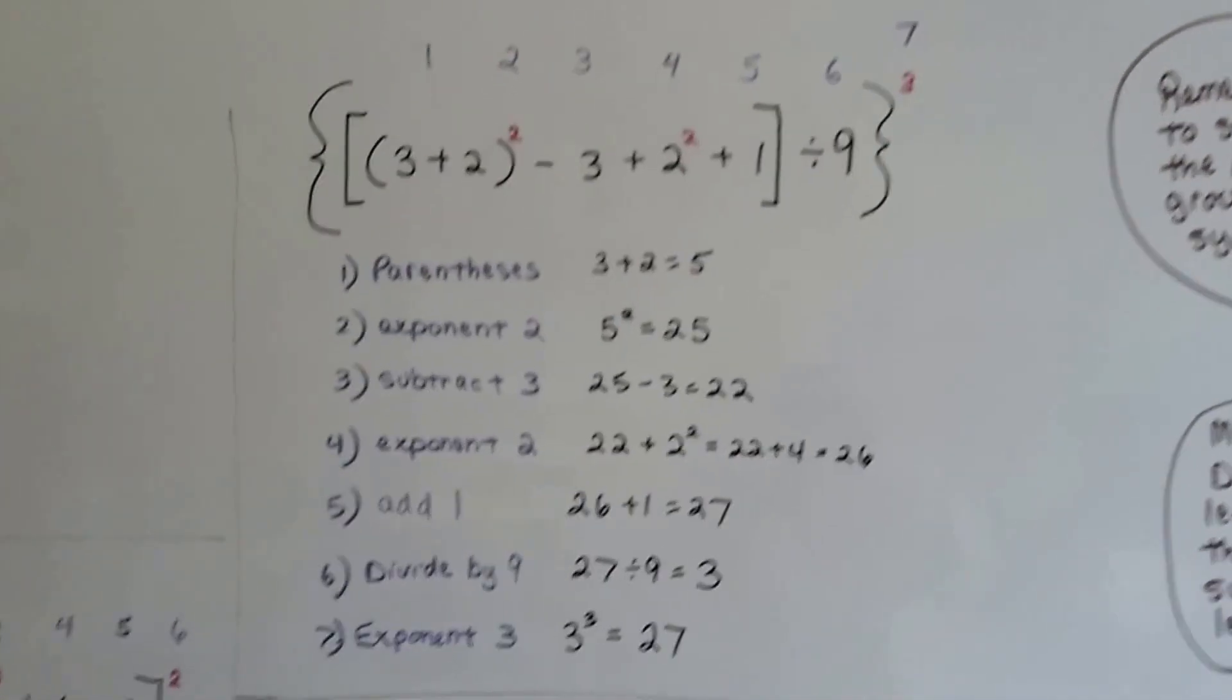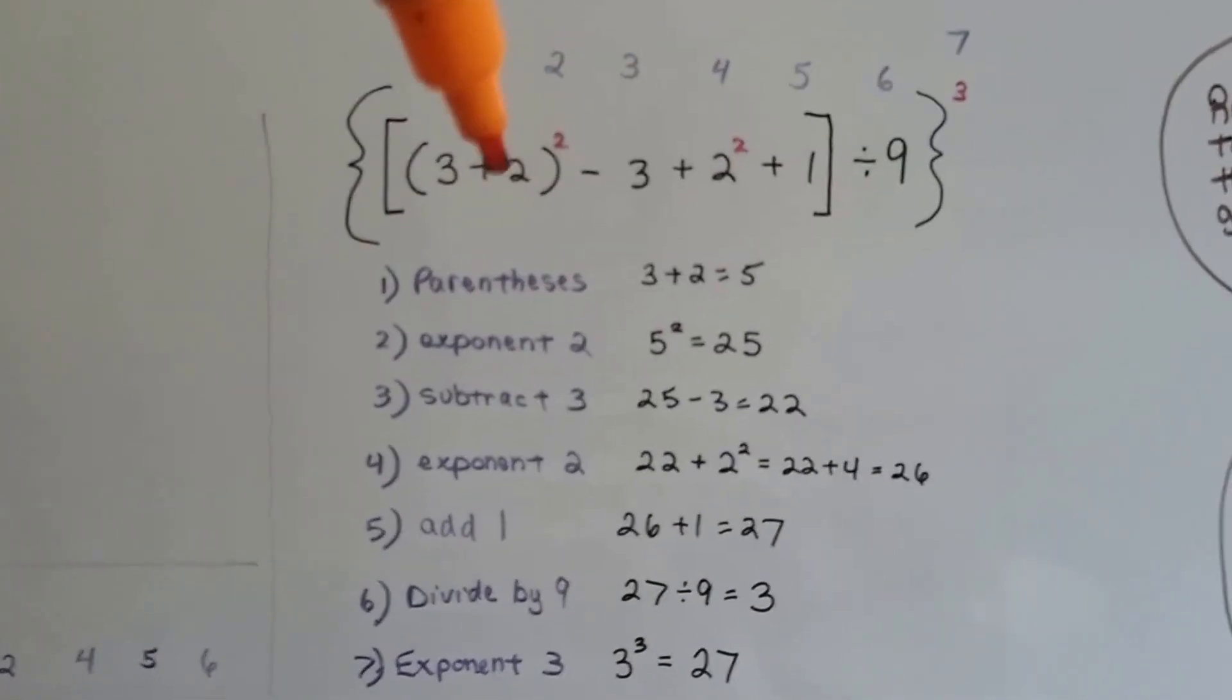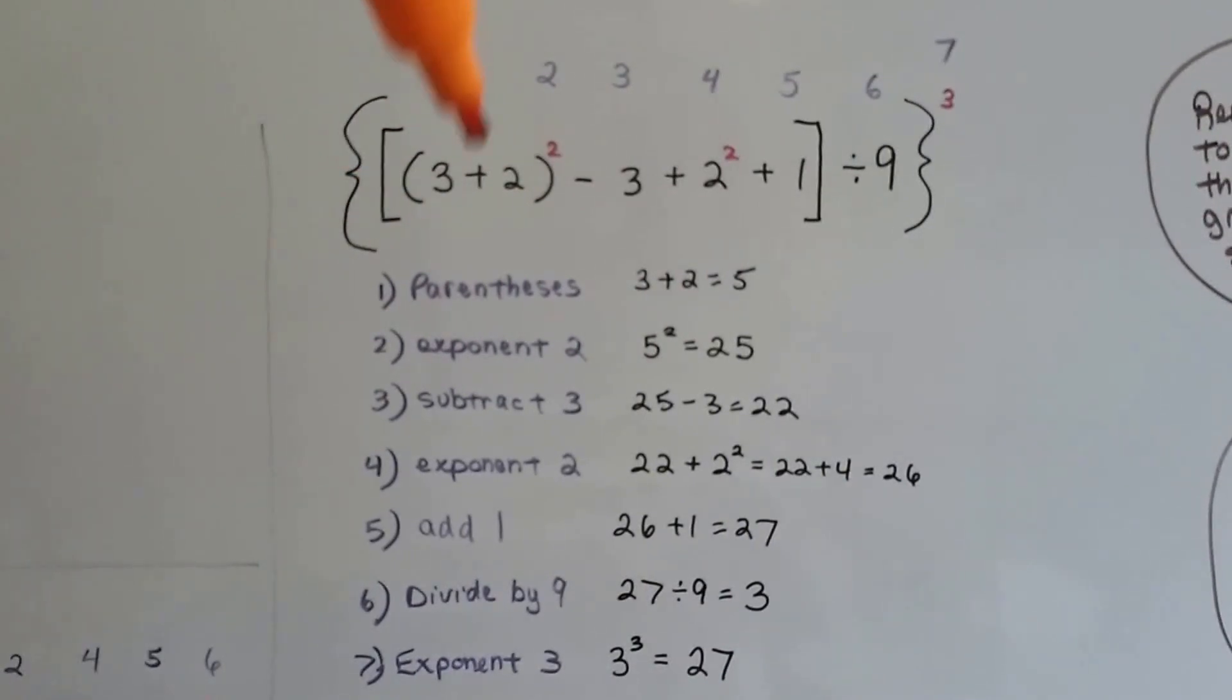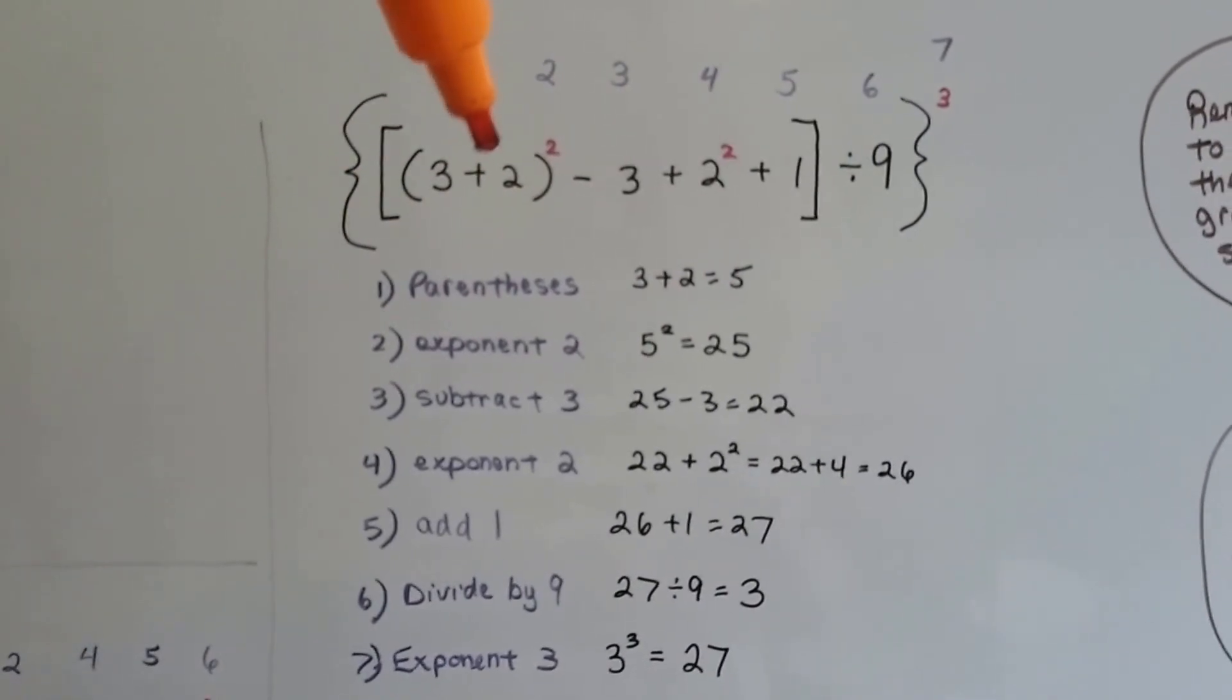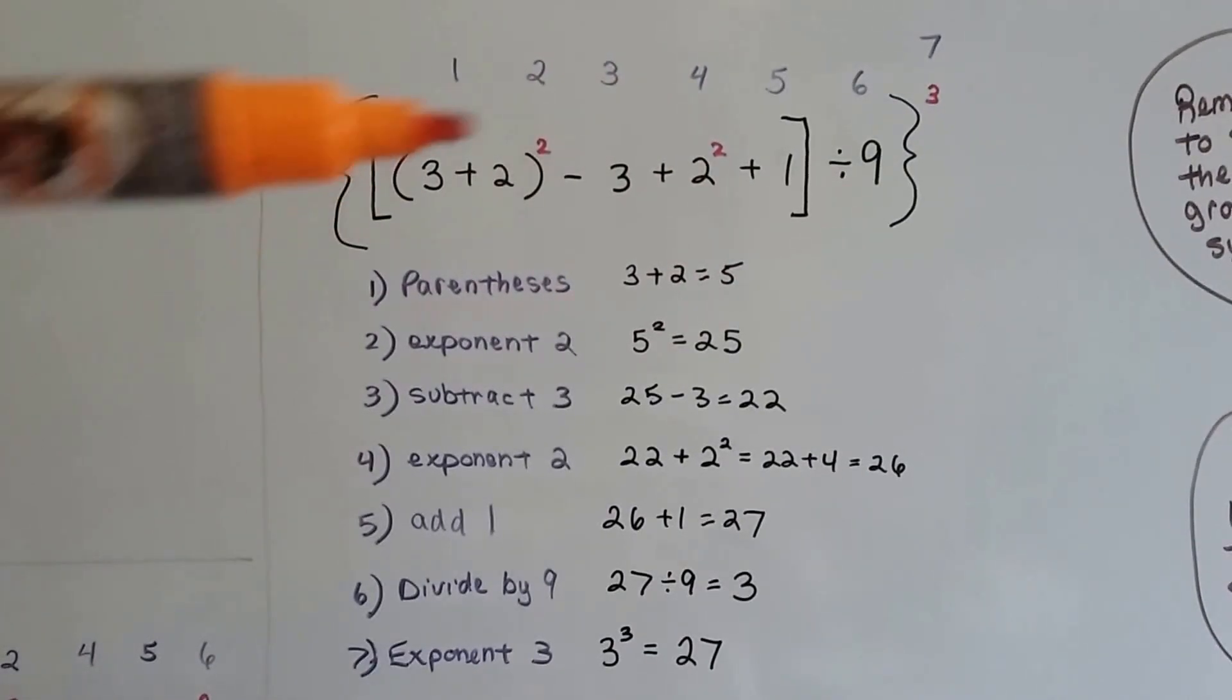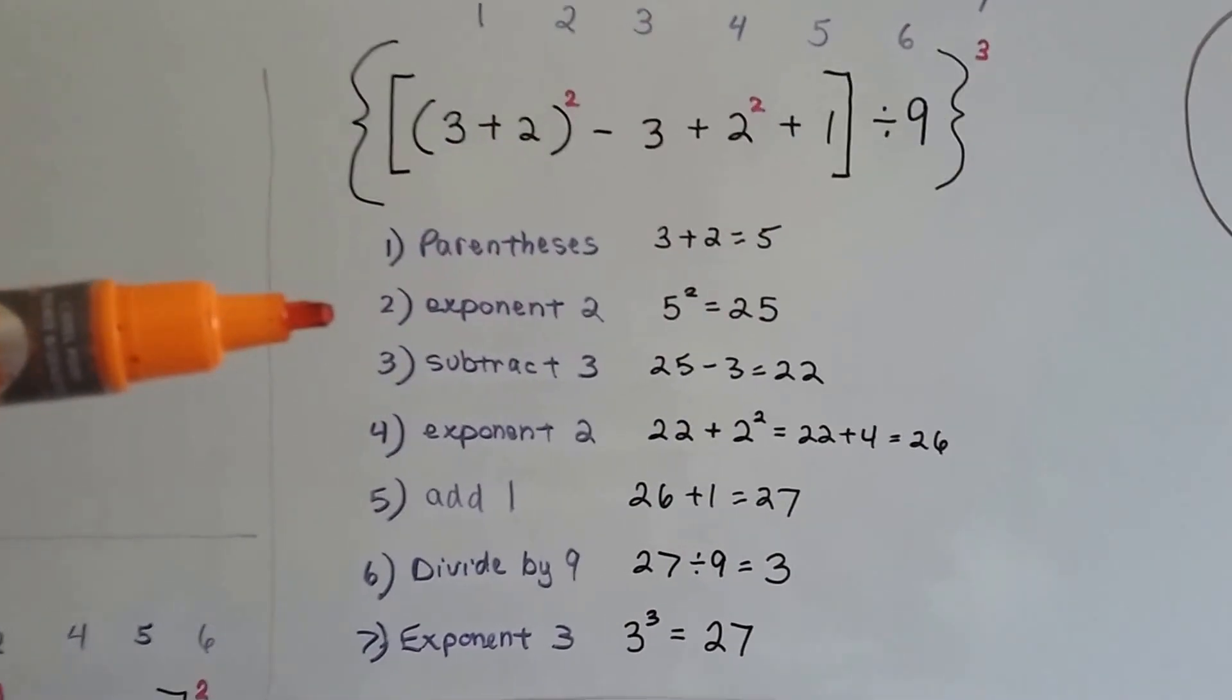Now I've got one with lots of grouping symbols. Look at all these steps. So the first thing we're going to do is the innermost parentheses. We have parentheses, we have brackets, and we have braces. So we're going to start inside the parentheses. 3 plus 2 is 5. The next thing we're going to do, number 2, is this exponent here. And 5 squared is 25.